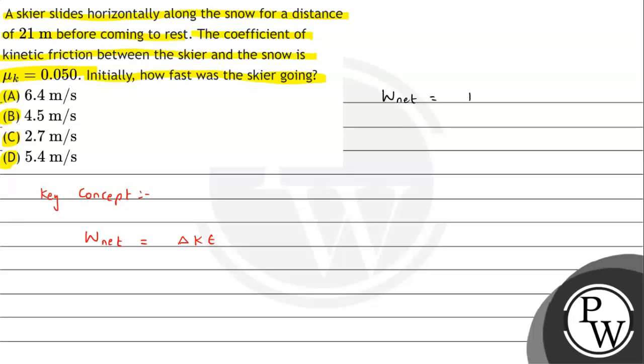So I'm taking W_net equals half m v_final squared minus half m v_initial squared. This term will be zero because it comes to rest. From this we can say W_net, the coefficient of kinetic friction is given. If the skier is moving towards right, friction force will be applied on the left side. So the angle between displacement and force is 180 degrees. From that we can say work done is F·s·cos(θ), and if θ is 180 degrees, then work done will be negative.